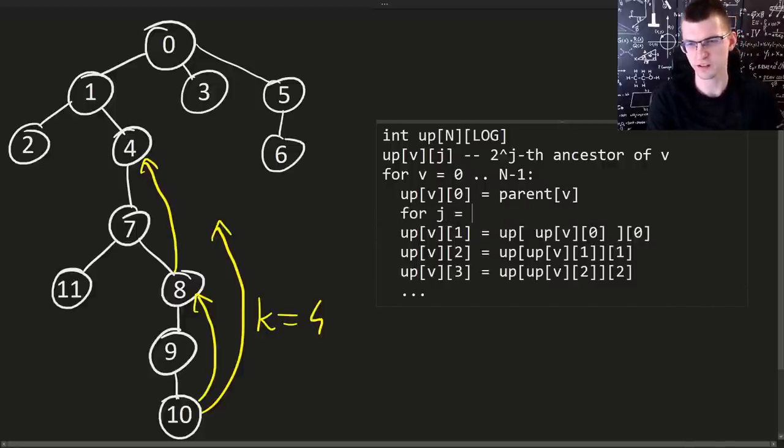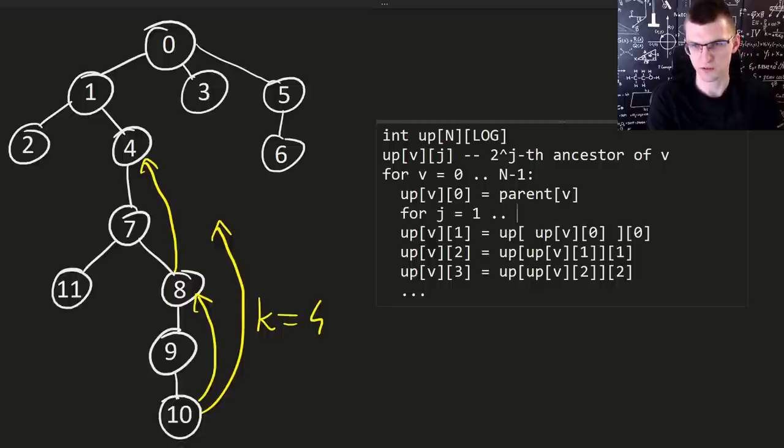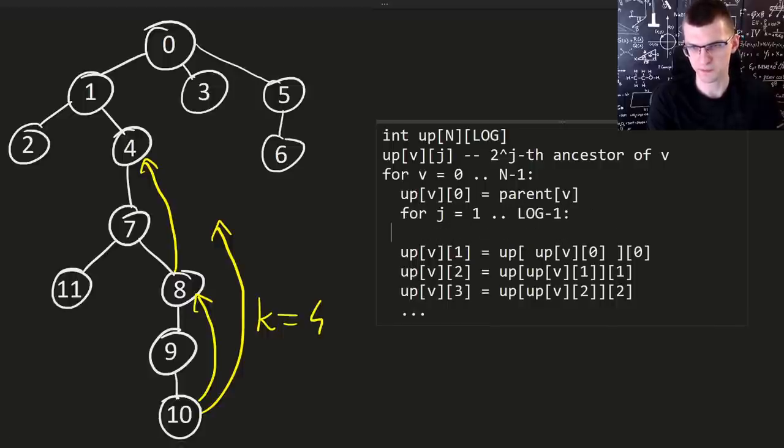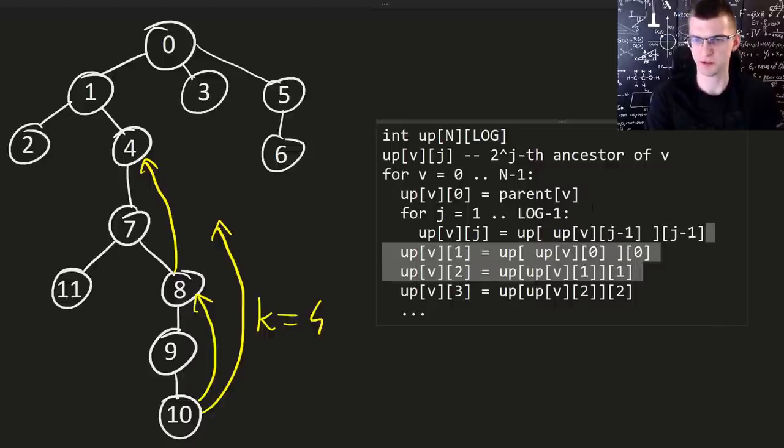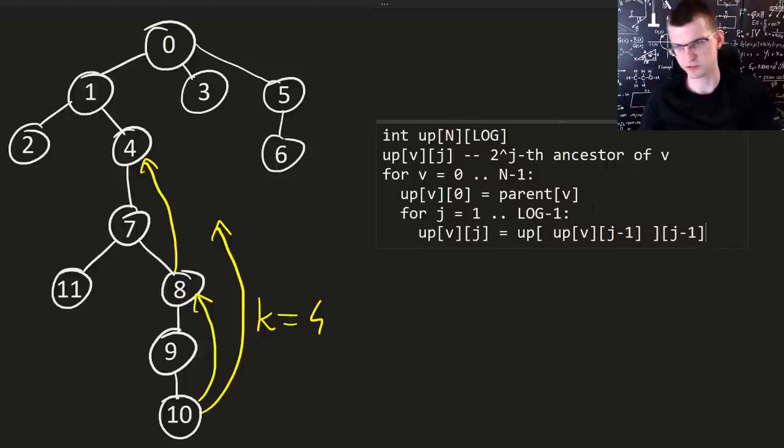Obviously this should be replaced with a for loop. For every j, again, this is just pseudocode. From one to log minus one. We compute this value. And here I take my previous power, j minus one, and I get its power. This replaces, of course, all those lines.